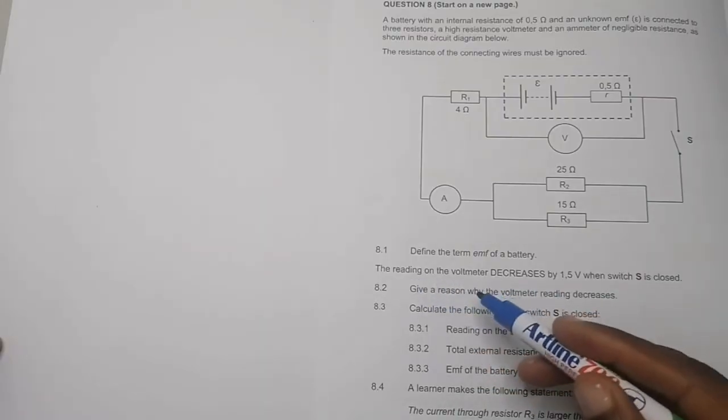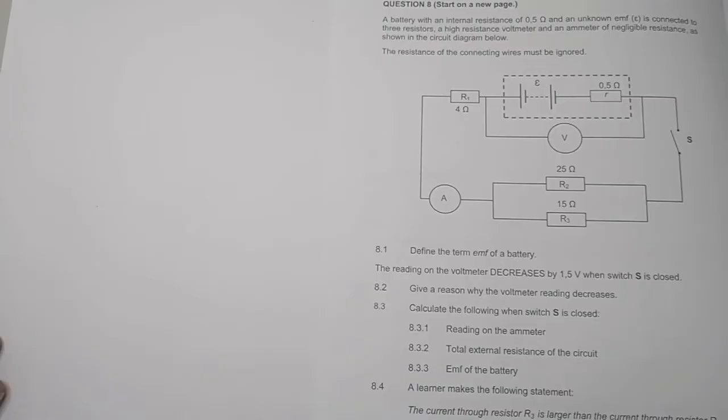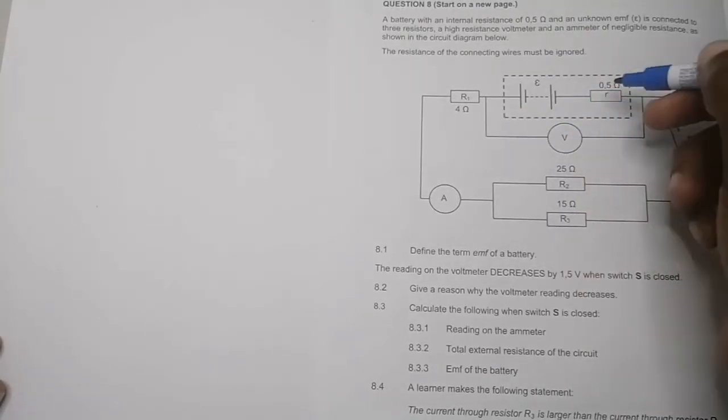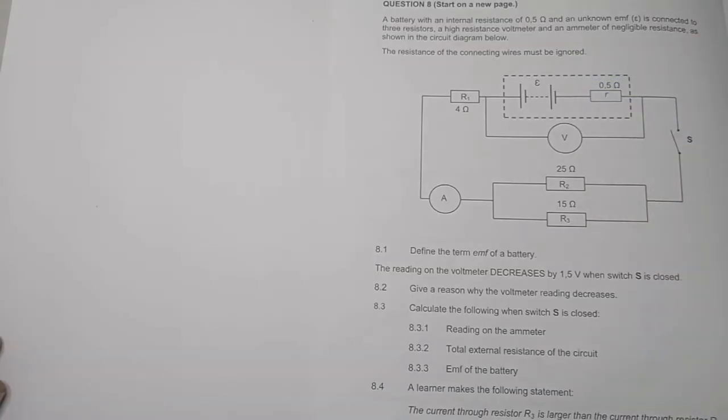They say the reading of the voltmeter decreases by 1.5 volts when switch S is closed. When switch S was open, there was no current flowing, so we can't have losses generated by the internal resistor.